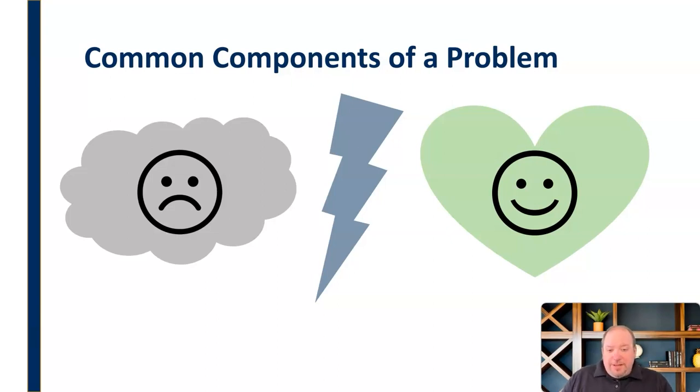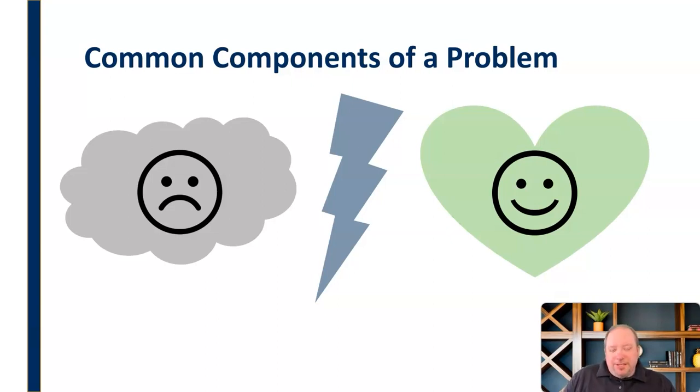Additionally, we could have some other components and characteristics of a problem, such as task difficulty, the number of possible solutions, group member interest in the problem, group familiarity with the problem, and a need for solution acceptance.